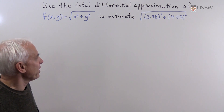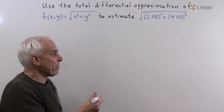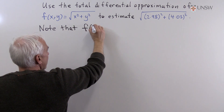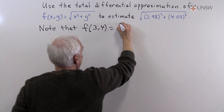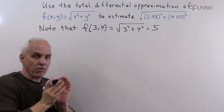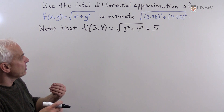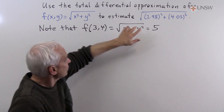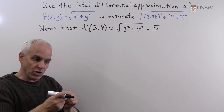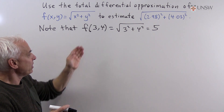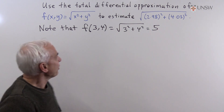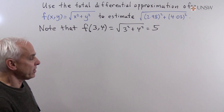This is a case where we know the function's value at a nearby point. Note that f(3, 4) = √(3² + 4²), which is exactly 5. We know that value. The two values 2.98 and 4.03 are pretty close to 3 and 4, and we know exactly how far away they are. So the function's value at these points is going to be close to 5, and we'll use the total differential approximation to find it.